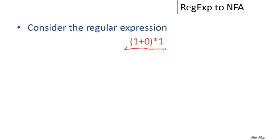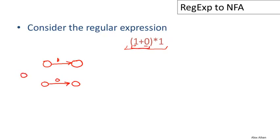Now let's do an example. Here's a regular expression and we want to build an equivalent non-deterministic machine. We follow our construction, working by induction on the structure of the regular expression, starting with simple ones and building up. We need a machine that accepts '1' — two states with a transition on the digit 1. Similarly, a machine for accepting '0'. Now we put them together in a machine that accepts either 1 or 0: from a new start state we can move to the machine for 1 or for 0, with epsilon moves back to a new final state.